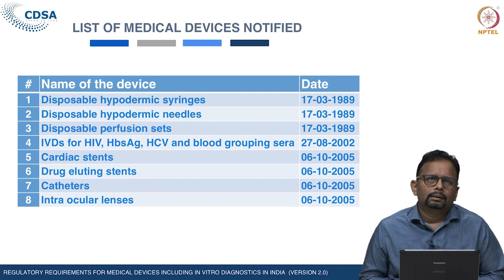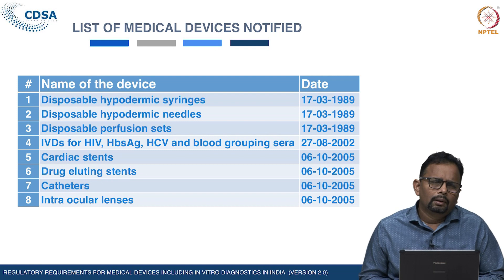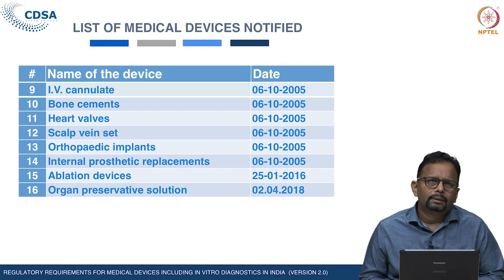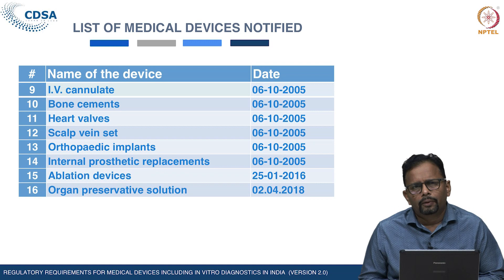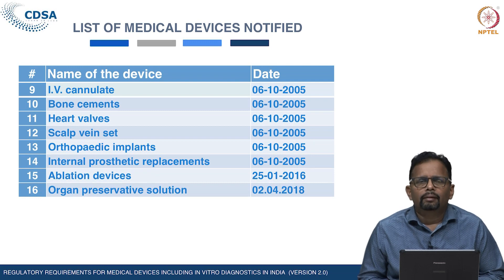Thereafter, in 2002, four categories of IVD kits were notified: kits for HIV, hepatitis B surface antigen (HBsAg), hepatitis C (HCV), and blood grouping sera. In 2005, ten more categories of medical devices were notified. Presently, 16 notified medical devices are regulated under Part 4 of Section 3(b). These include: disposable hypodermic syringes, disposable hypodermic needles, disposable perfusion sets, HIV/HCV/HBsAg kits and blood grouping sera, cardiac stents, drug-eluting stents, catheters, intraocular lenses, bone cements, heart valves, scalp vein sets, orthopedic implants, internal prosthetic replacements, ablation catheters (notified 2016), and organ preservative solutions (notified 2018).